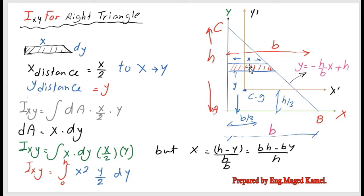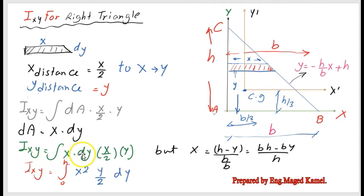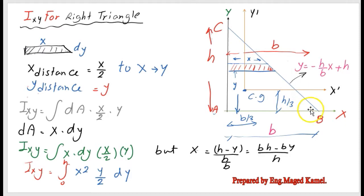We are dealing with the CG of the strip. The dA itself is equal to x multiplied by dy, so we have Ixy equal to the integration of x·dy·(x/2)·y, which gives x²/2·y·dy.